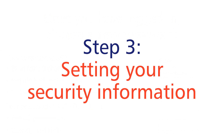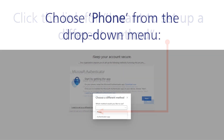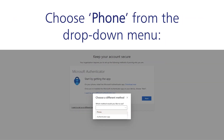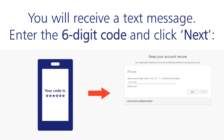Step 3: Setting your security information. Click the link for 'I want to set up a different method.' Choose Phone from the drop-down menu. Choose United Kingdom from the list and enter your phone number. You will receive a text message — enter the 6-digit code and click Next.